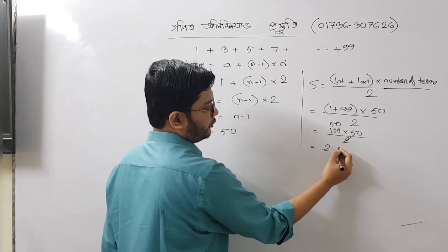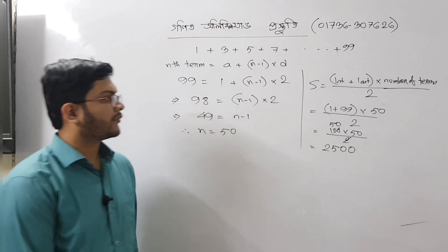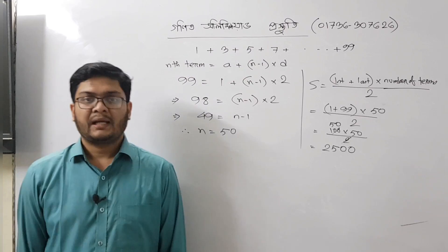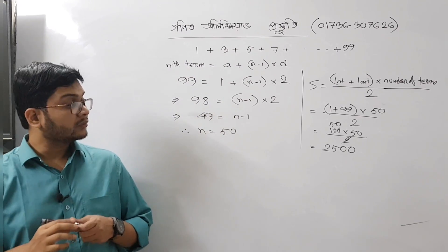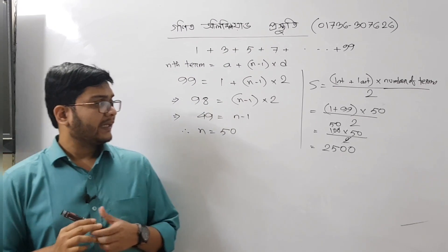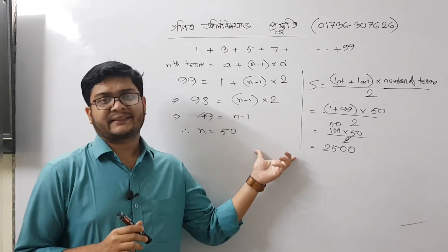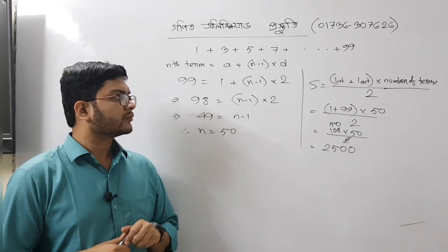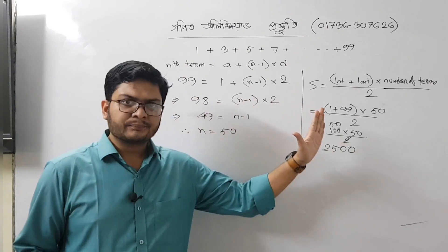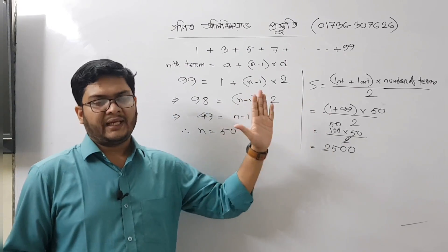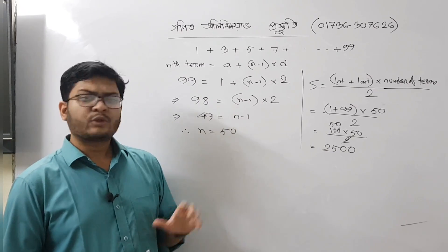We will write S is equal to 50 times 50, which is equal to 2500.